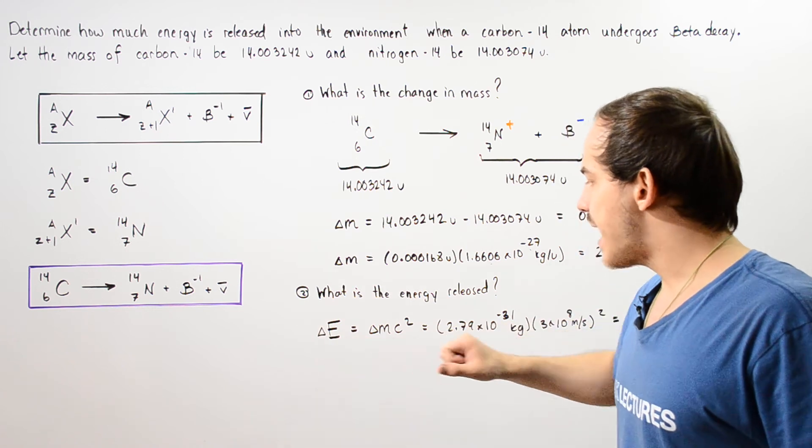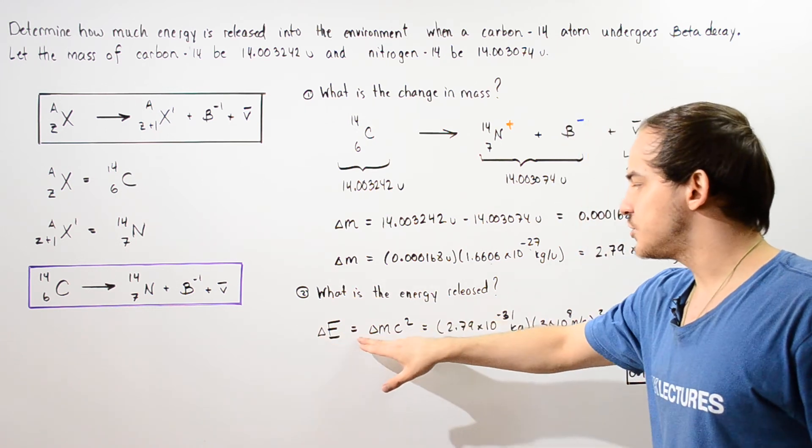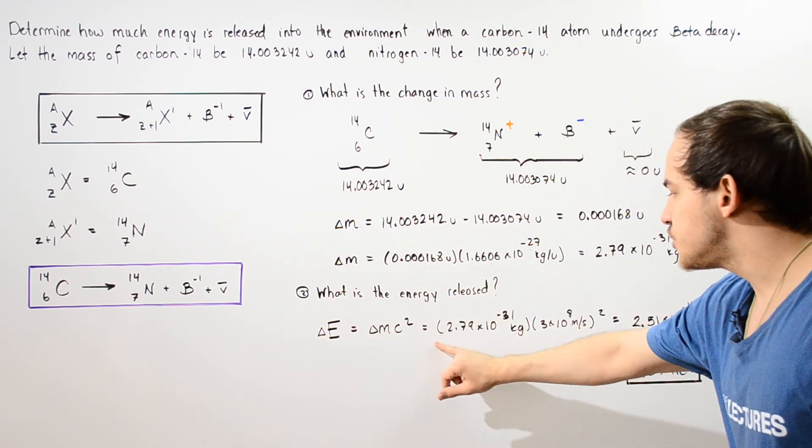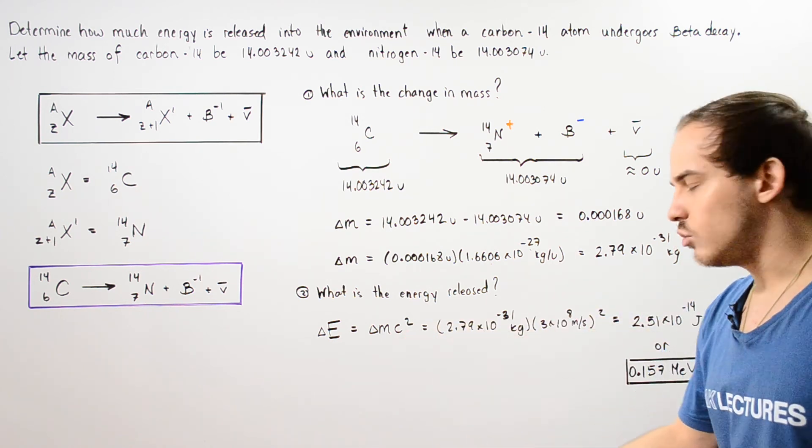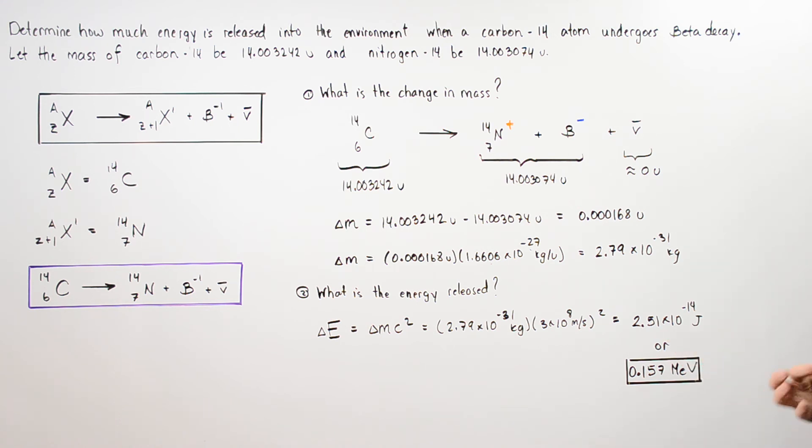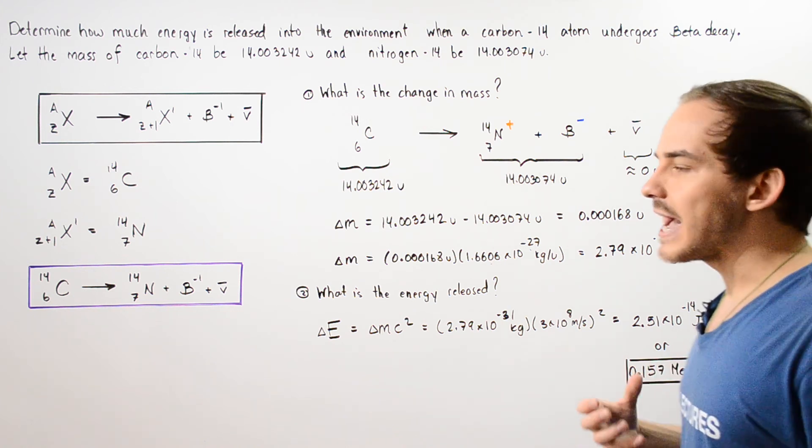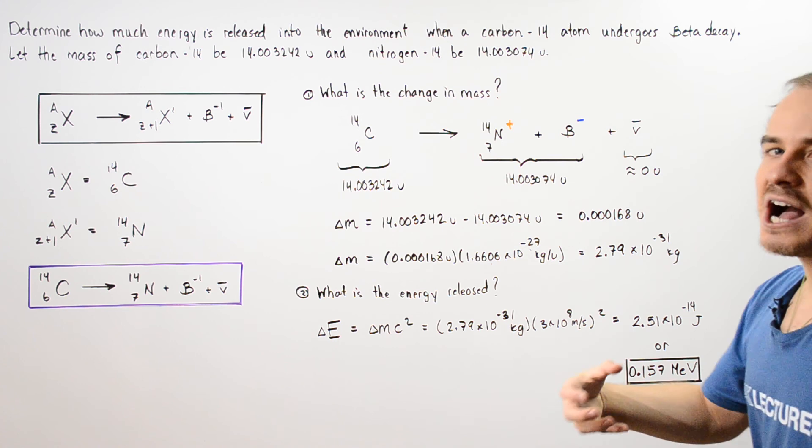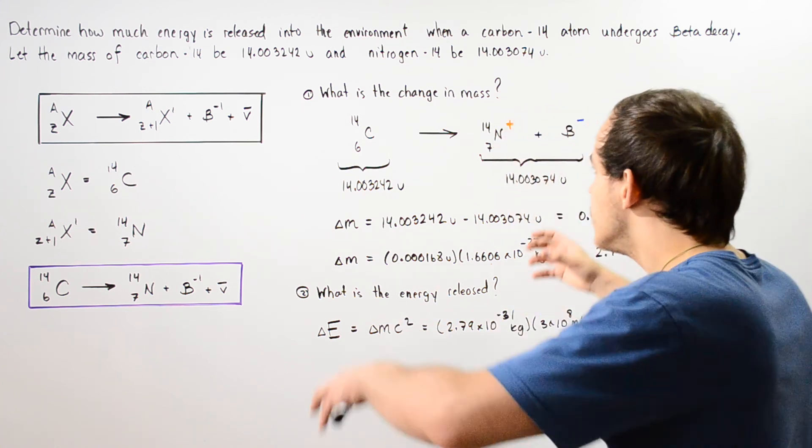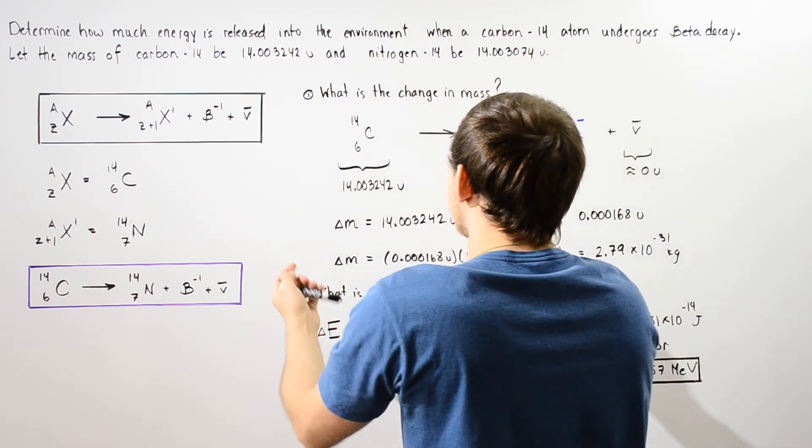So the change in energy is equal to the product of the change in mass in kilograms and the square of the speed of light in a vacuum and we get that our energy in joules is about 2.51 times 10 to negative 14 joules or equivalently about 0.157 mega electron volts. So basically this is by how much more stable the products are than our reactants. This is how much energy is released when this specific beta decay reaction takes place.